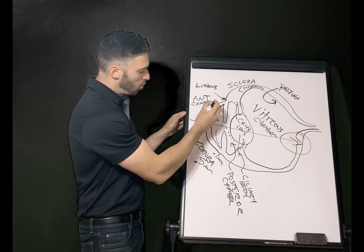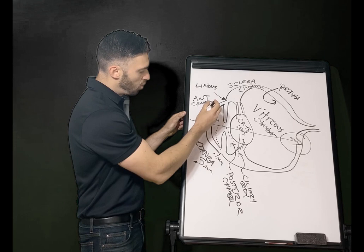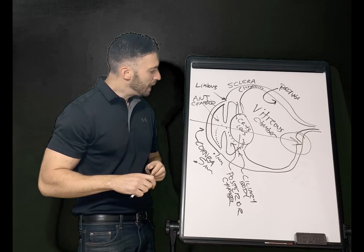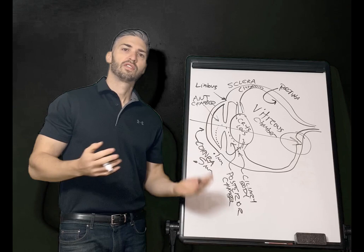The front surface of the cornea is a convex shape, with an average of around plus 48.8 diopters, and the back being concave is more like minus 5.8 diopters — giving us that plus 43 diopter average overall. That will differ from individual to individual.